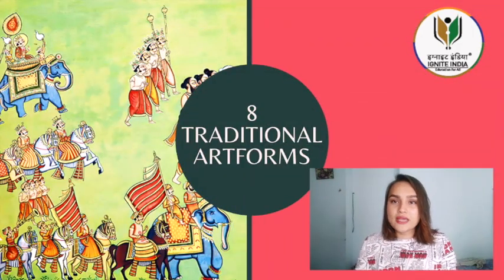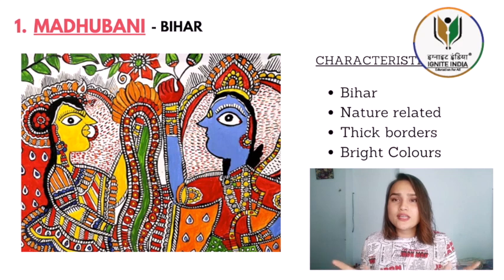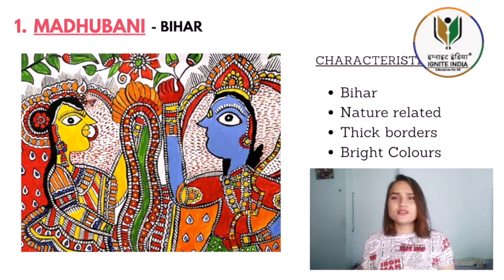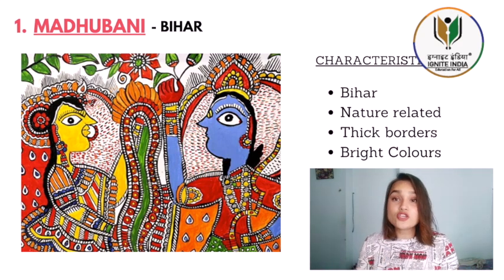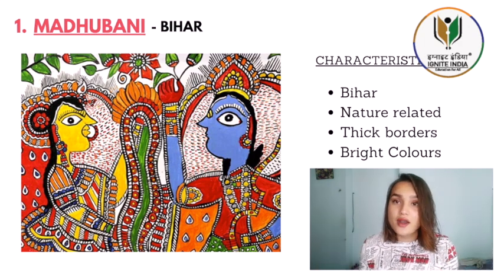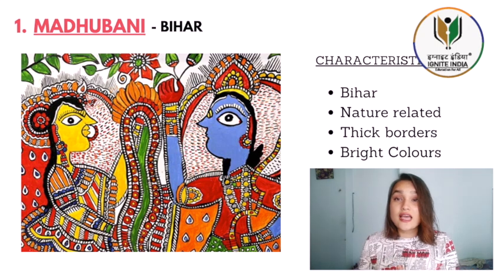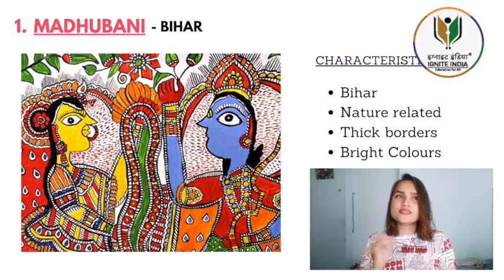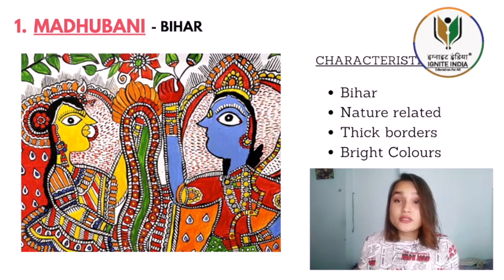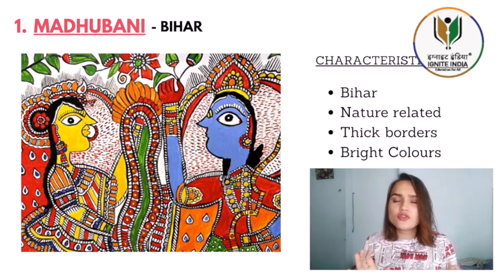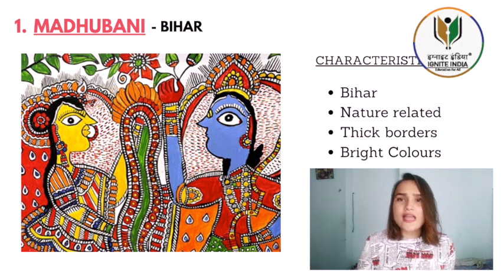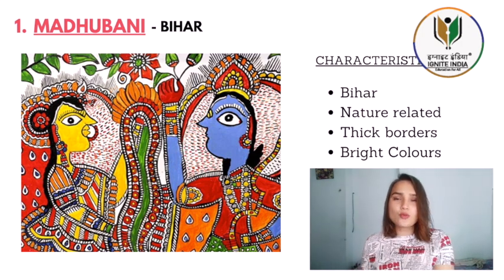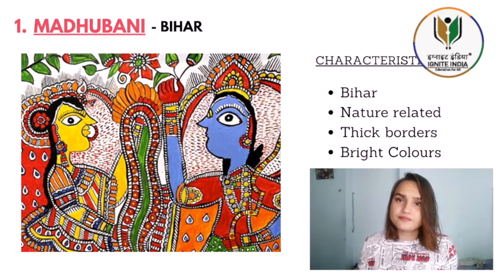Our first important painting is Madhubani. Madhubani painting belongs to Bihar — just get this into your mind. It has bright colors and thick lines. It is derived from nature — you can see natural features everywhere like flowers and leaves. You can also see humans, and most of the humans are in angular form and you can see only one eye. That's one way you can identify a Madhubani painting.